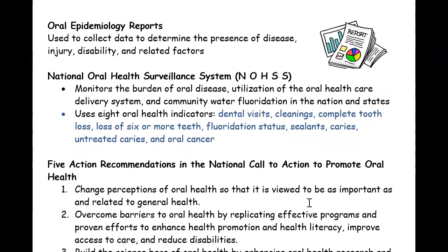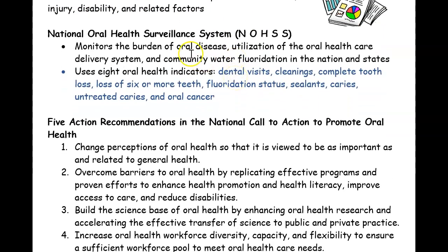Where can you go to find epidemiological reports — data on how much disease, dental injury, or disability exists somewhere? Every country has different resources, but there's a national one called NOHSS — the National Oral Health Surveillance System. If you search it up, you'll find that they study eight different things.